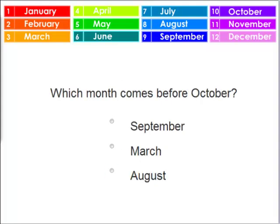Last one. Which month comes before October? Is it September, March, or August? Which month comes right before October? Well, here's October, and the one right before it is September.